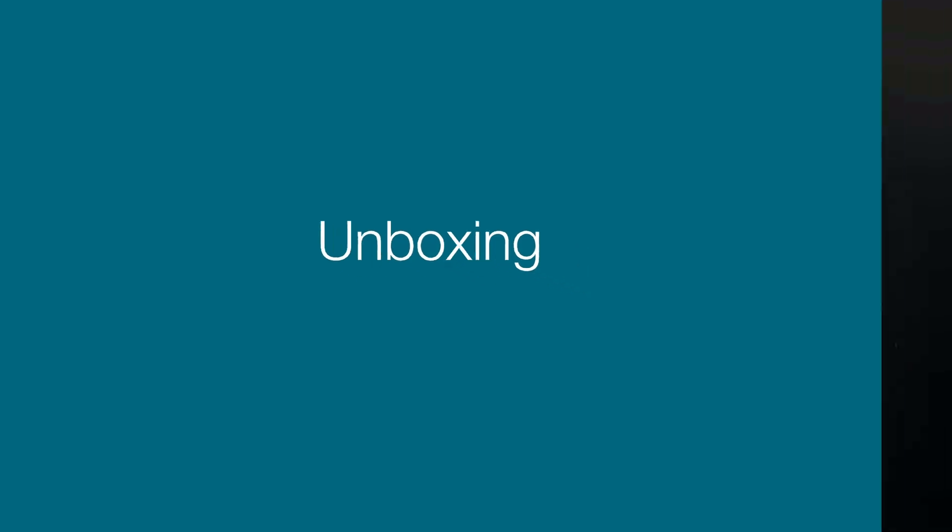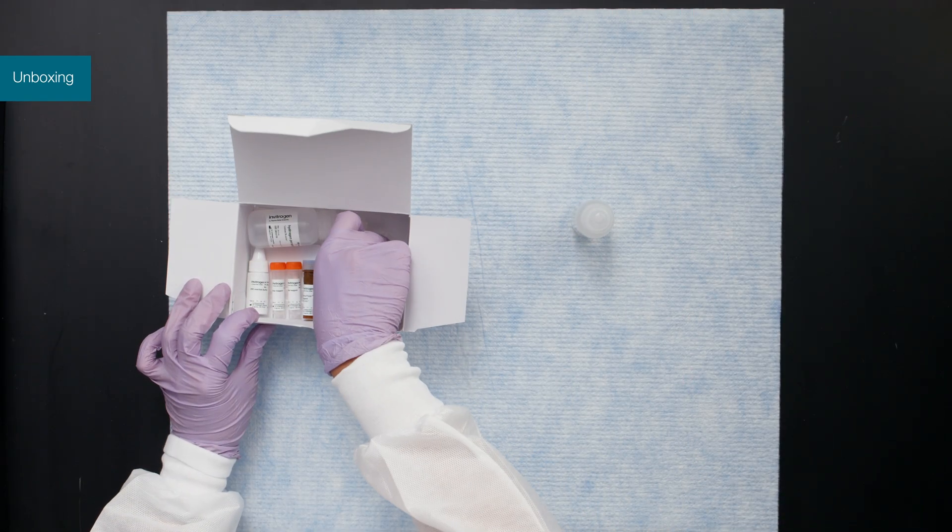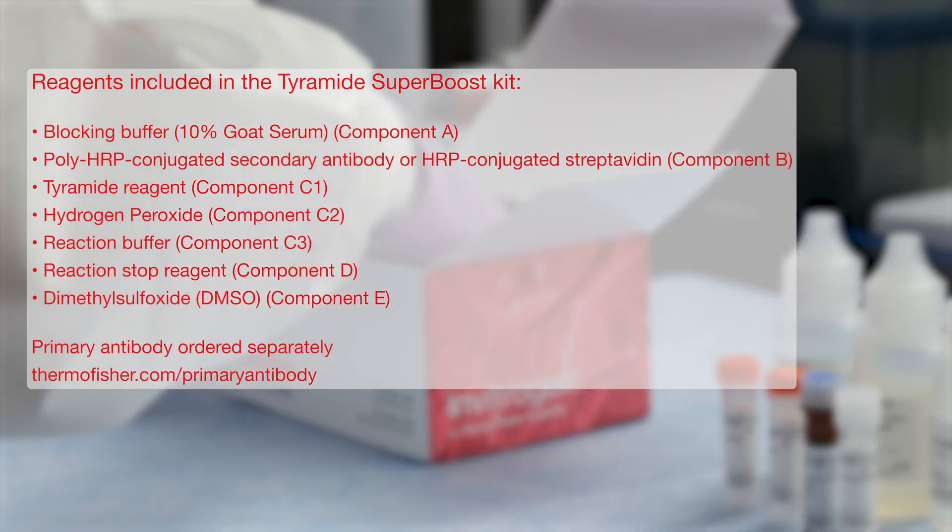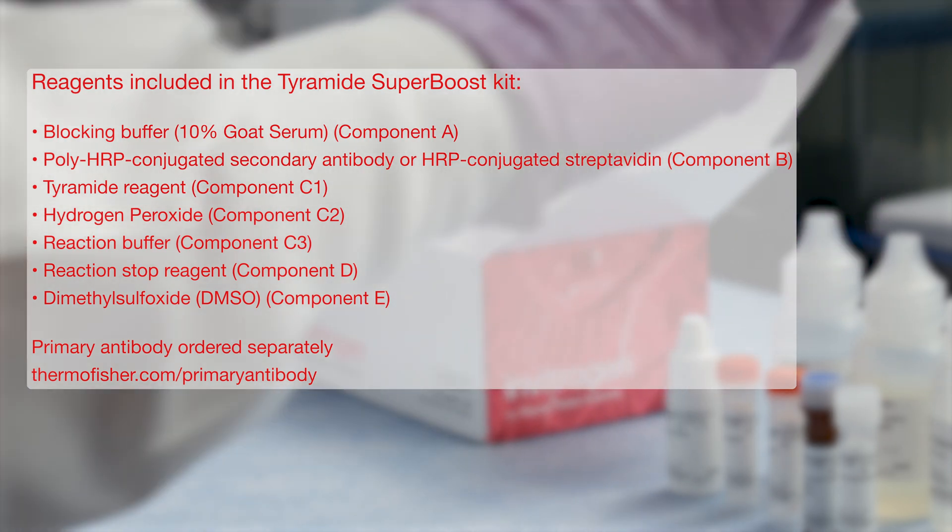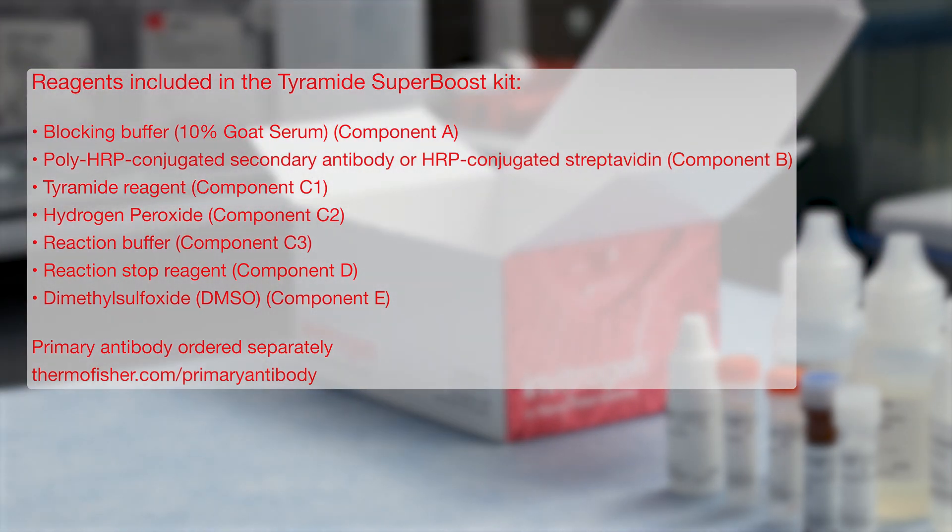The Tyramide SuperBoost kit contains the vital reagents for the experiment, including the poly-HRP secondary antibody and the Tyramide reagent. You will separately need to order a primary antibody that can be used in IHC or Spatial Biology applications.